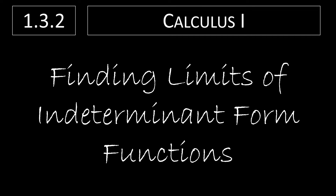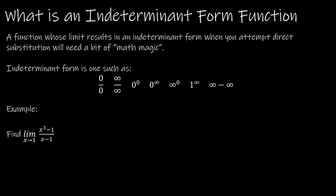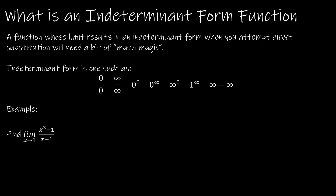We're going to finish up section 1.3 by taking a look at limits of indeterminate form functions. An indeterminate form function is one where, when we try to find the limit by direct substitution, we end up with an indeterminate form such as 0 over 0, infinity over infinity, 0 to the 0, 0 to the infinity, and so forth. These are things we cannot evaluate directly, but that does not mean the limit does not exist — it just means we might have to do a little math magic.